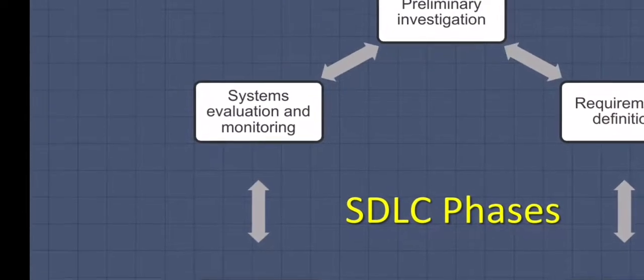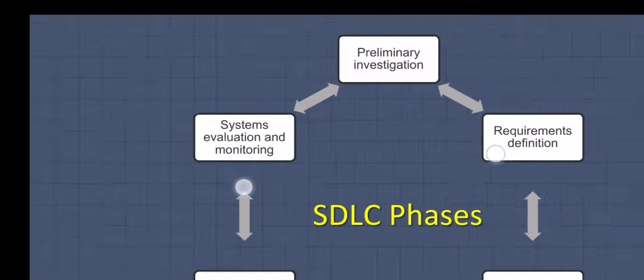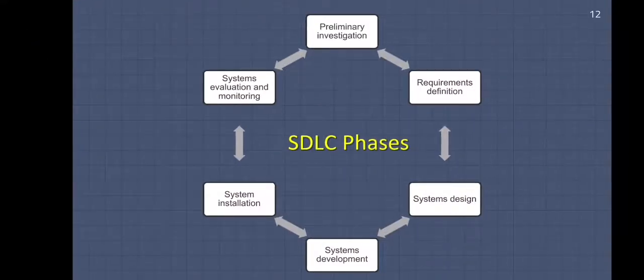Next we have systems evaluation and monitoring. This means that the newly operational system is evaluated and monitored for the purpose of enhancing its performance and adding value to its function. As you can see in this diagram, it is a cycle, so it means that looping back from a later phase to an earlier one may occur if the need arises.